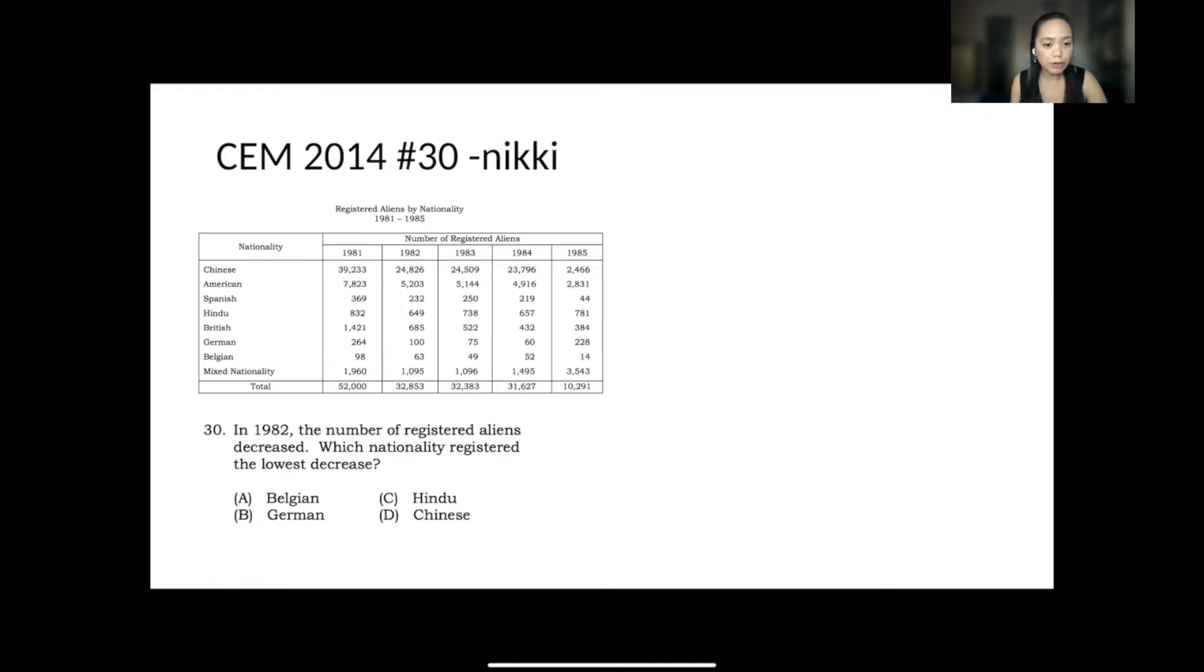Here in number 30, in 1982, the number of registered areas decreased. Which nationality registered the lowest decrease? Normally, when I say lowest decrease, I just look at the decrease value.